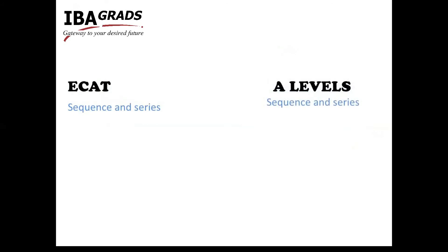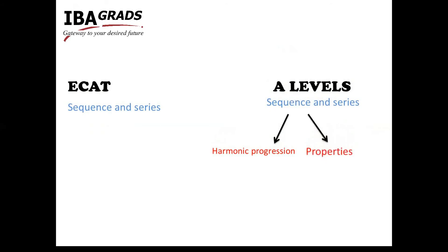Next is Sequence and Series — 1–2 questions come from this. One type is missing in A-Levels. Questions also come from this in GIK, and the properties of Sequence and Series are not discussed in A-Levels, but here we discuss them in detail because they are important for these university tests.